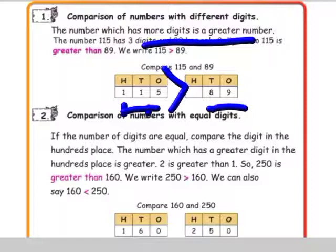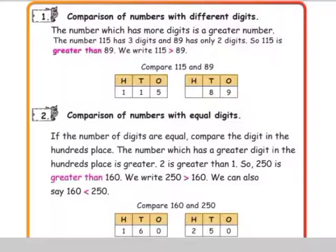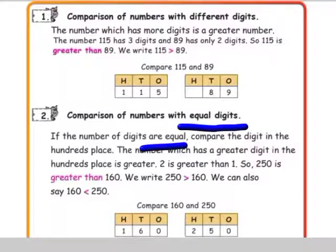Next, comparison of numbers with equal digits. When the numbers have an equal number of digits, compare the digits in the hundreds place.